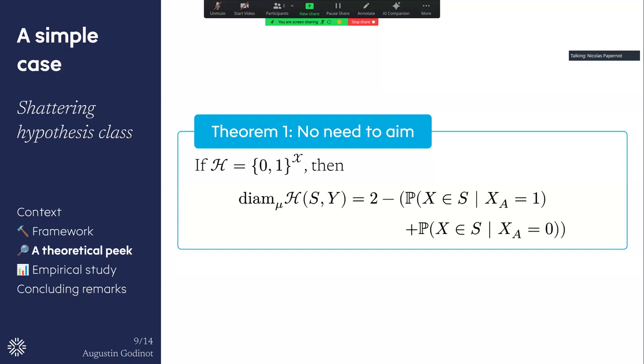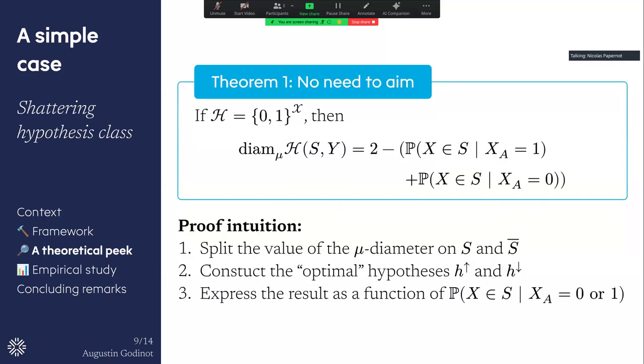And for this type of hypothesis class, we found that the guarantees on the audit manipulability have a very nice expression that only depends on the proportion of points that you sample in the two sensitive groups when you create your audit set. And this is an issue, because here we can see that if we have a random algorithm that achieves this proportion, then any other so-be-it-clever algorithm that selects the points actively would have the same performance as this random algorithm.